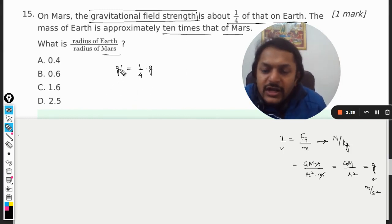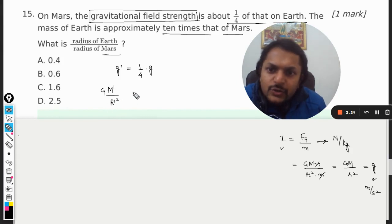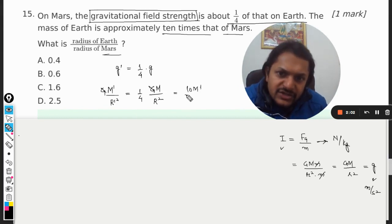On the planet Mars it should be G M dash, the mass of Mars, divided by radius of Mars squared, and it will be one by four. This G can be taken as mass of Earth divided by radius of Earth. From here G cancels out, and we know that the mass of Earth is 10 times that of Mars, so it will be 10 M dash divided by 4 R square.